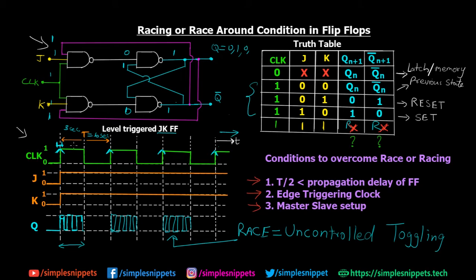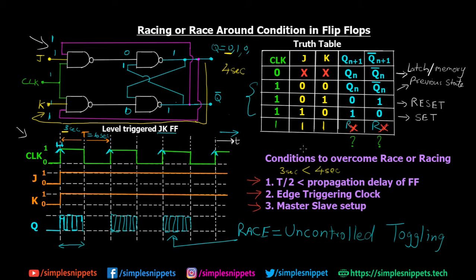Let's come back to the graph. T is 6 seconds, so T/2 is 3 seconds. What we are saying is this 3 seconds must be less than the propagation delay of the flip-flop. Propagation delay is the delay that happens when the Q output is fed back to the initial flip-flops — Q is fed back to K. There is some amount of time taken by the flip-flop for this transfer. Let's say that is 4 seconds — so 3 seconds is less than 4 seconds.